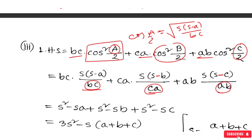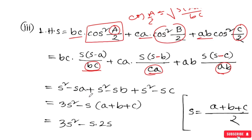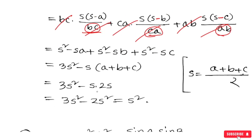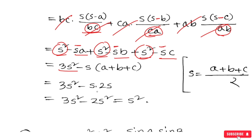BC got a second, AB·CSC got a second, AB got a second. It is s into (s minus a), and s into (s minus b), and s into (s minus c). s is common: 3s squared in a 3x score — s is equal to (a plus b plus c) by 2. We can say 2s equals a plus b plus c.